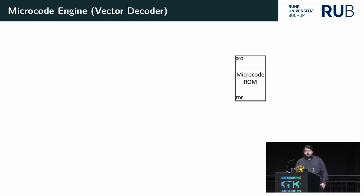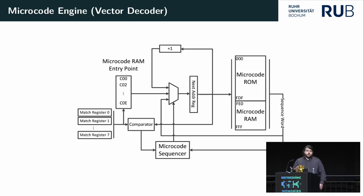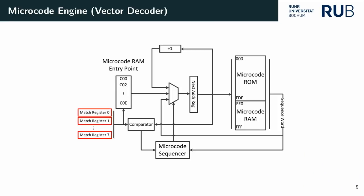The microcode engine is essentially the vector decoder. It is comprised of a microcode ROM, which stores instructions for the microcode engine, and a writable microcode RAM where microcode updates end up when applied. Around this storage there are match registers, which act as breakpoint registers. If you write an address from inside the microcode ROM into a match register, whenever that address is fetched, execution control is transferred to the microcode RAM — causing our patch to execute.